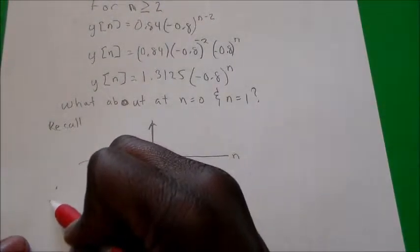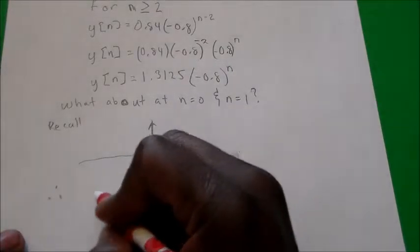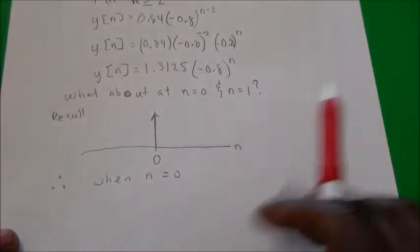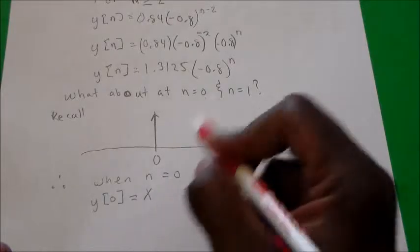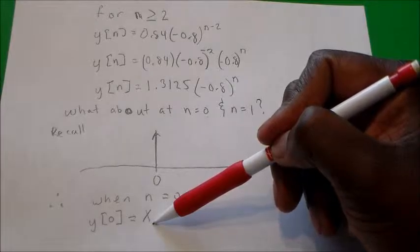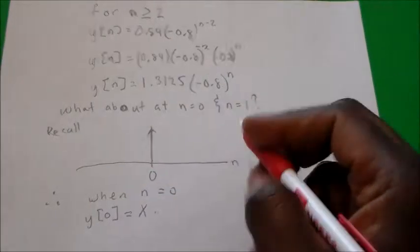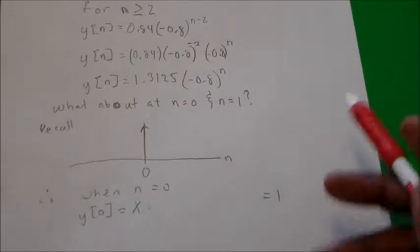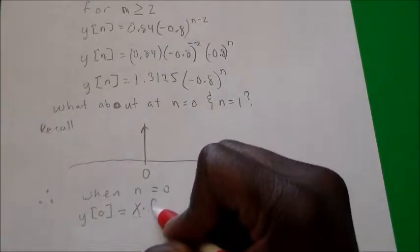Therefore, when n is equal to 0 — one of the areas we're interested in — we say that y of 0 is equal to x times the delta function at 0, plus 1.3125 times negative 0.8 raised to the nth power. Here I'm using x not as the input, but to solve for what the delta function needs to be multiplied by in order to get the output, which is 1, since when n equals 0 the output from the system is 1.